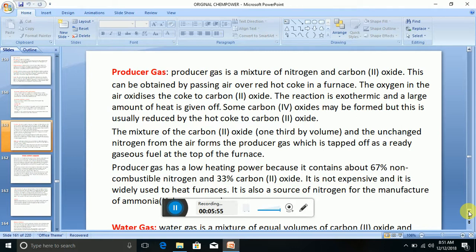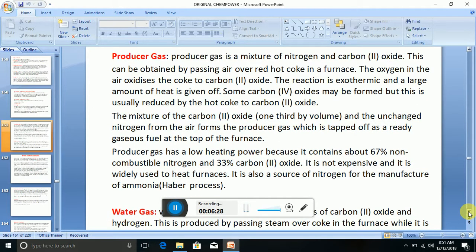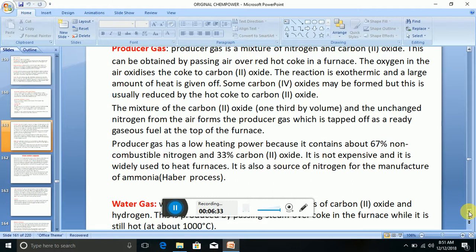Producer gas has a low heating power because it contains about 67% non-combustible nitrogen and 33% carbon 2 oxide. It is not expensive, and it is widely used to heat furnaces. It is also a source of nitrogen for the manufacture of ammonia in the Haber process.